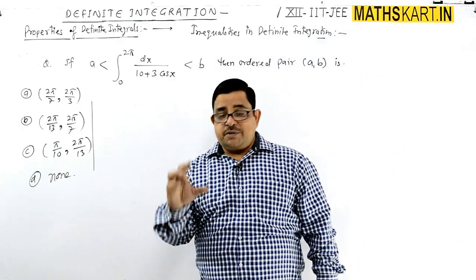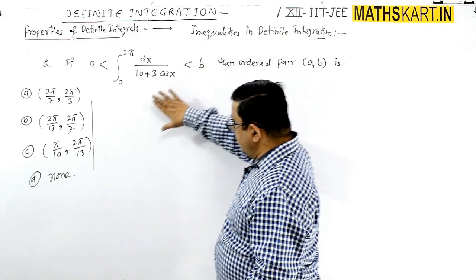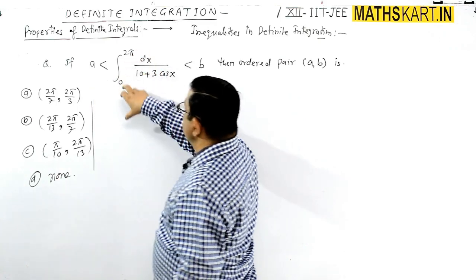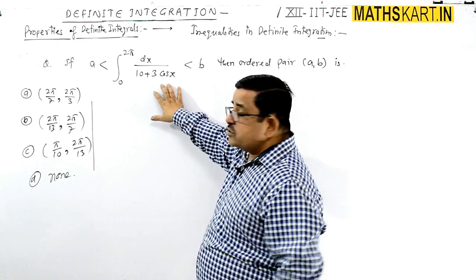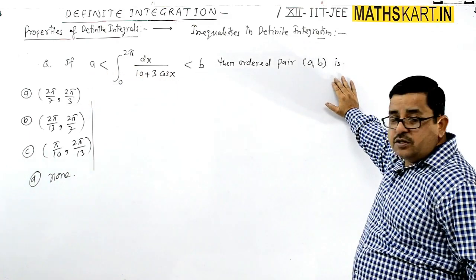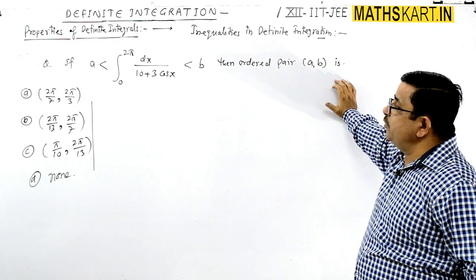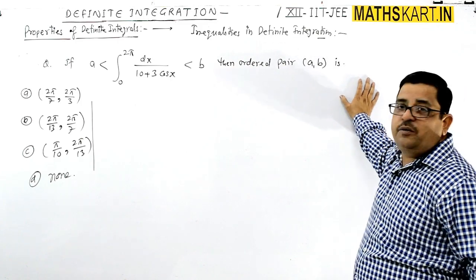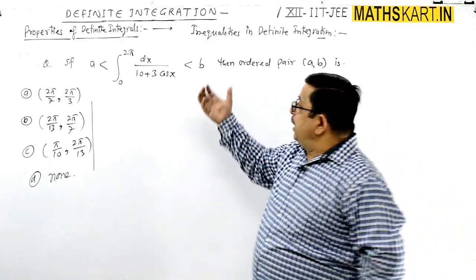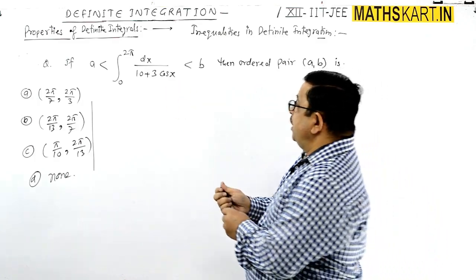In this case, we have understood the three main properties of inequalities. So the first question is here. He has given values between a and b, then the ordered pair of a and b. In that inequality, a is the smallest value, b is the greatest value, and we have to find out the ordered pair of values. There is a direct workout. We can solve this function here, but we have to find out directly the minimum and maximum value.